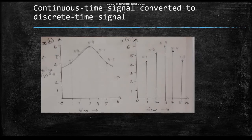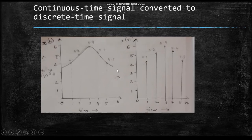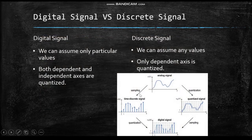The second type is the continuous time signal converted to a discrete time signal. Here a voltage versus time continuous signal x(t) is converted to a discrete time signal x(n).